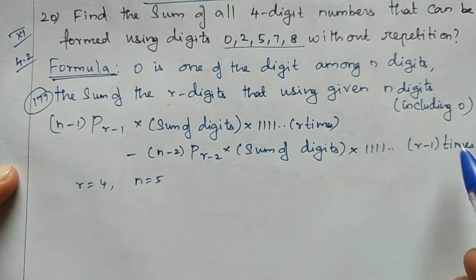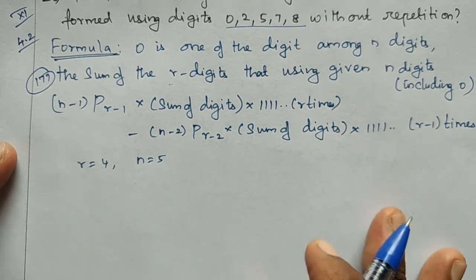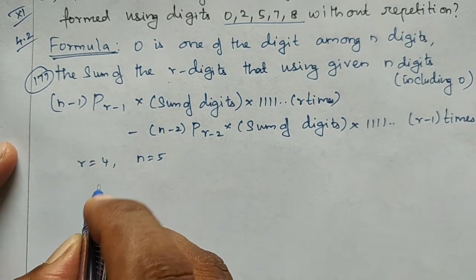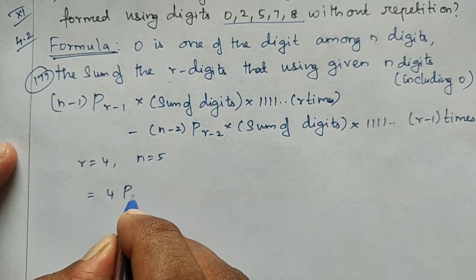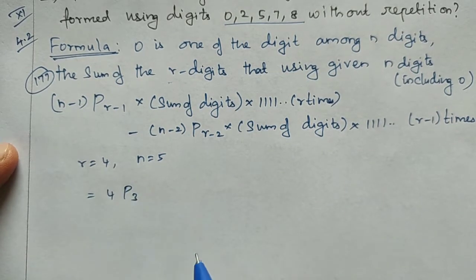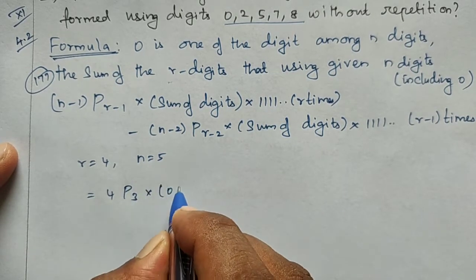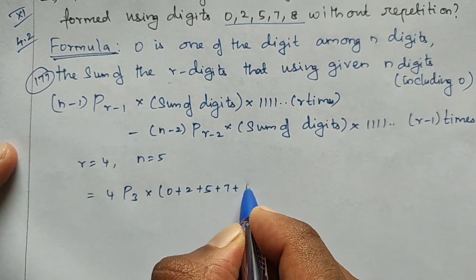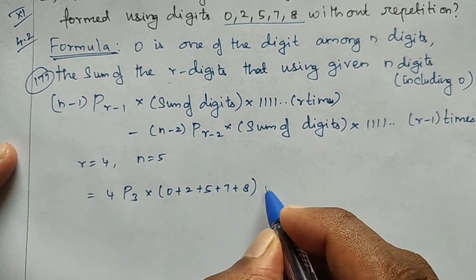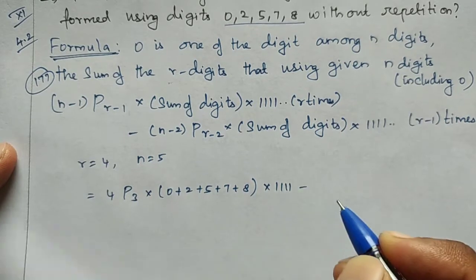Applying the formula with n=5 and r=4: (n−1)P(r−1) = 4P3, and the sum of the digits is 0+2+5+7+8 = 22, multiplied by 1111.